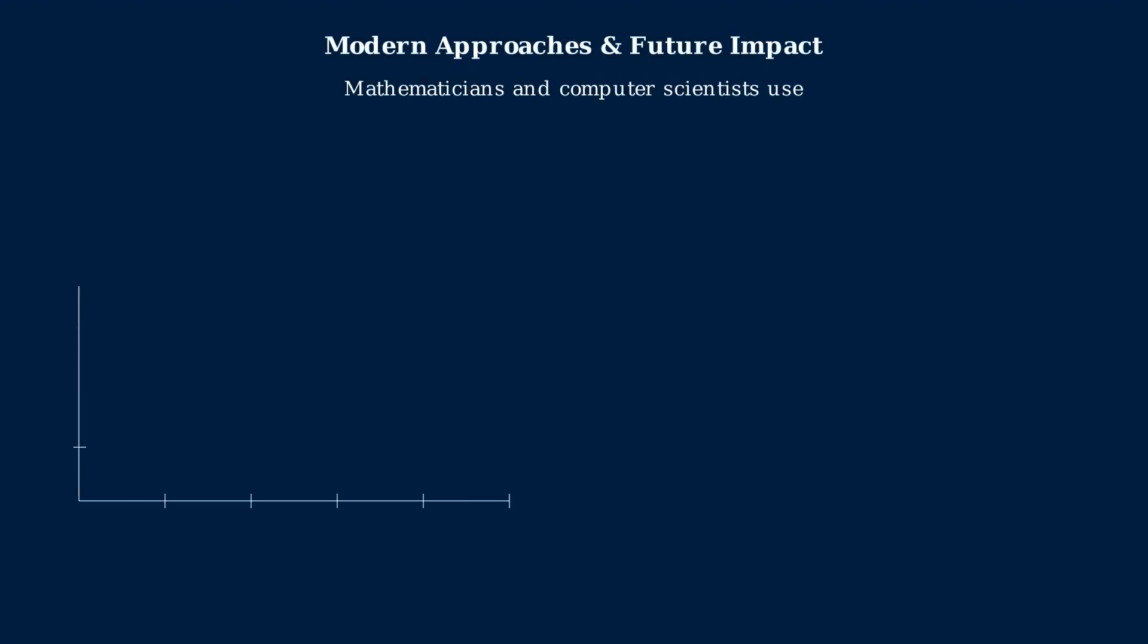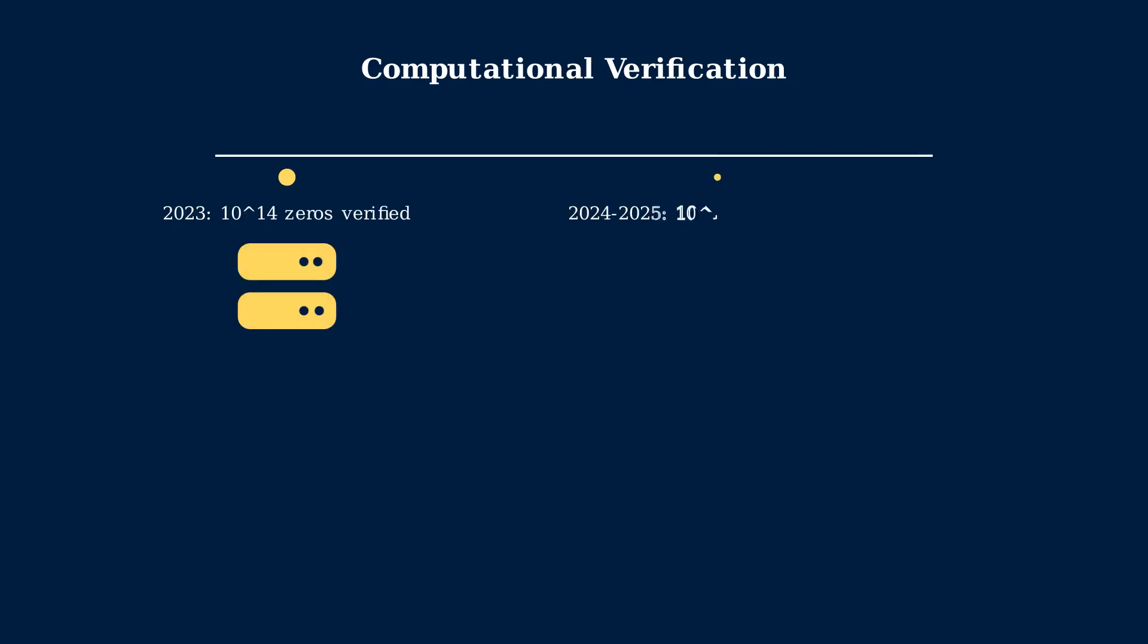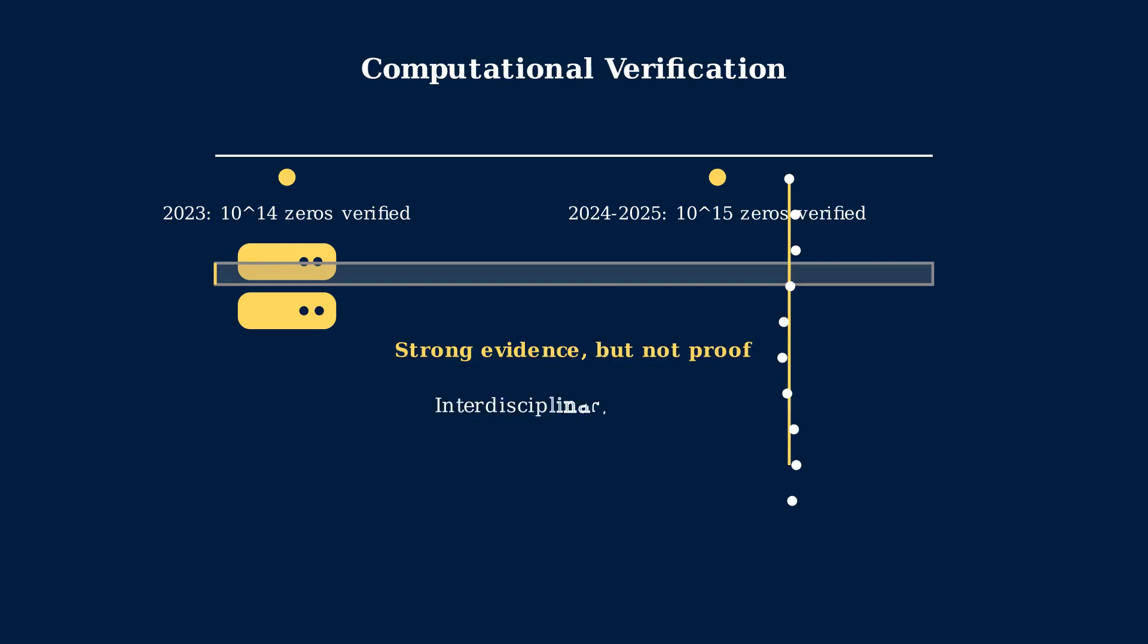Today, mathematicians and computer scientists use massive computations and deep theoretical tools to test the hypothesis. Trillions of zeros have been checked, and every single one so far lies on the critical line. But a proof still eludes us. A solution could reshape mathematics, accelerate AI models dealing with structure and randomness, and redefine what's possible in encryption and theoretical physics. Modern supercomputers have been used to verify the Riemann hypothesis for trillions of zeros. By 2023, researchers verified zeros up to the 10^14th point. In 2024 to 2025, a joint effort extended this to 10^15 zeros. These computations provide strong evidence for the Riemann hypothesis, but they don't constitute a proof, because a single counterexample could still exist beyond these checked ranges. It also highlights how interdisciplinary the approach to the problem has become.